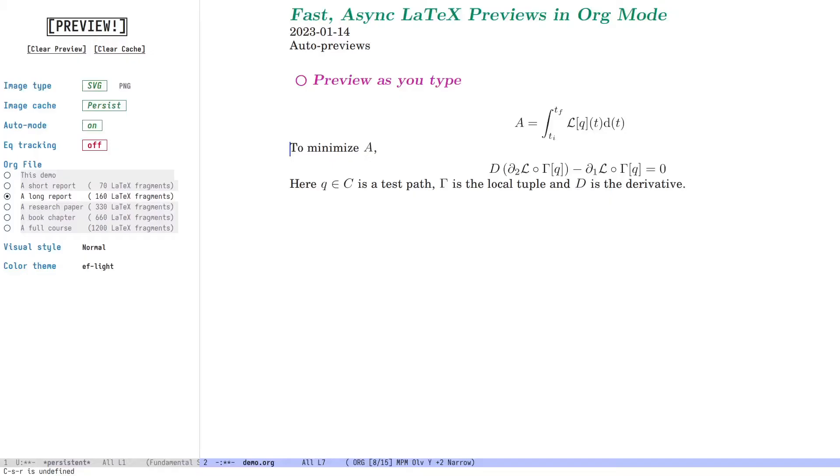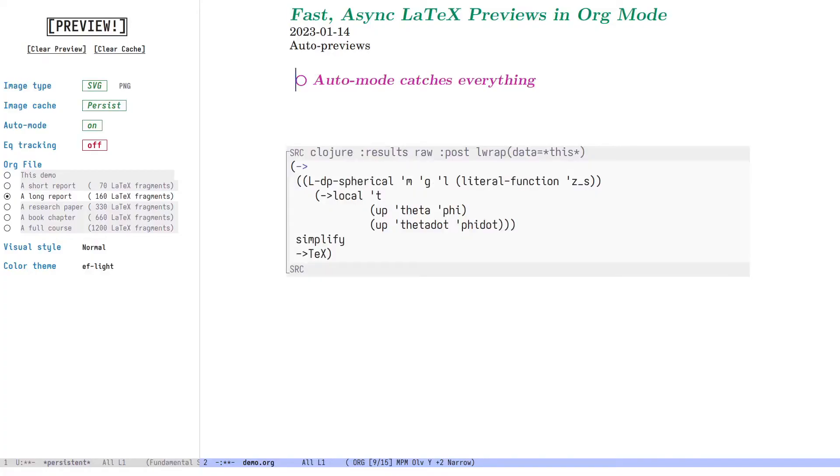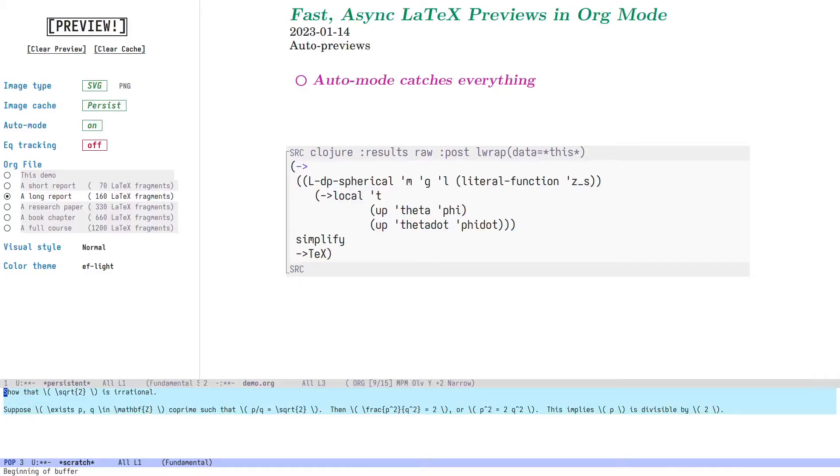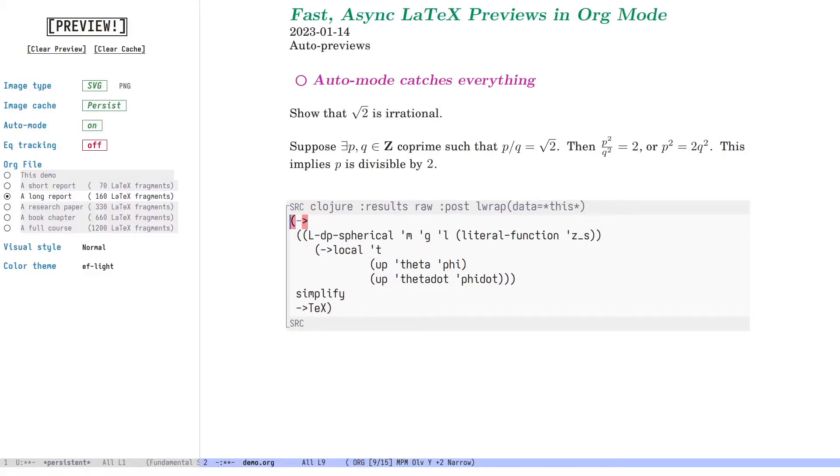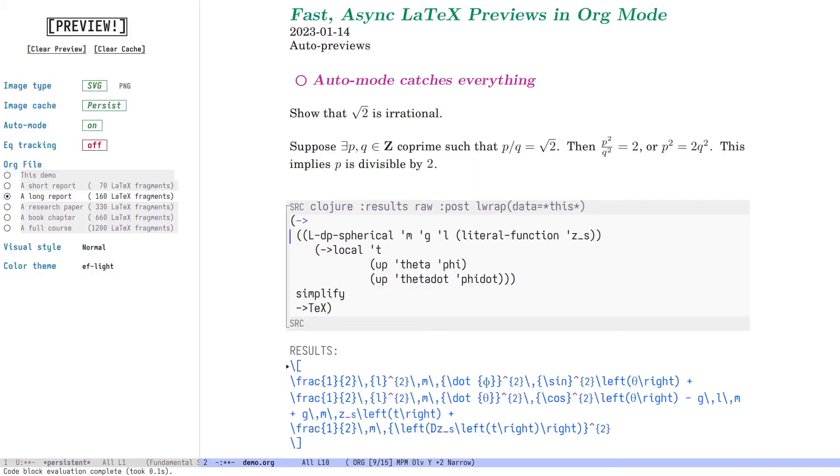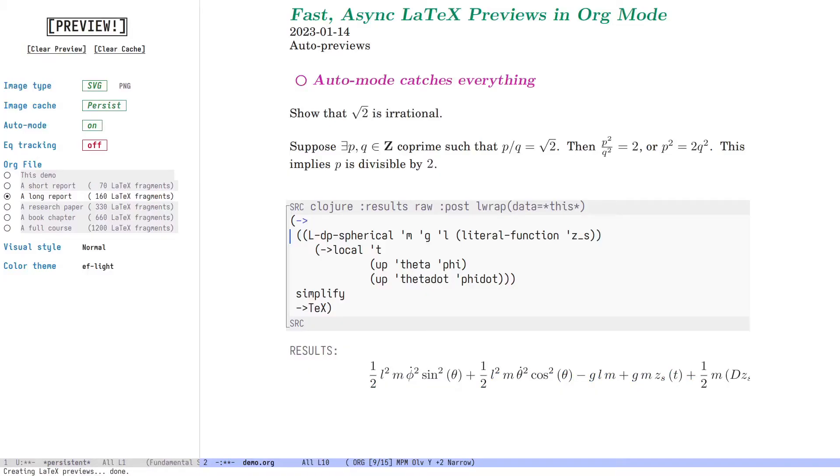If you've used the popular third-party package org-fragtog, this behavior might seem similar. But aside from being much more performant, the included auto-mode reacts to insertions no matter how they occur. For example, I could copy some text that has LaTeX fragments from a different buffer into this one. And the previews are generated automatically. Or if you have, let's say an org babel code block like this one that produces LaTeX output, then it's converted instantly.